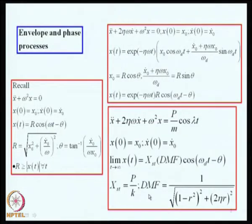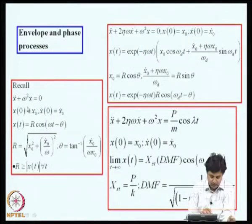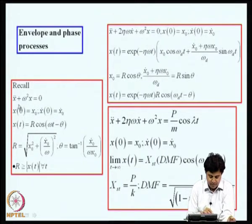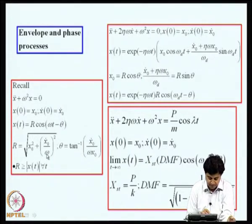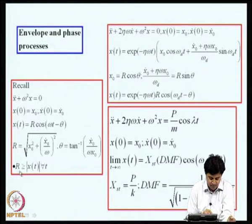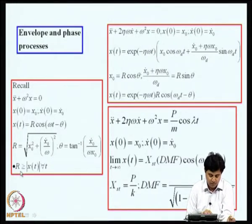I also talked briefly about the notion of envelope and phase processes during the last lecture. We consider, for example, undamped free vibration of a single degree of freedom system. The equation of motion is X-double-dot plus omega-squared X equal to 0, and if the system starts from initial conditions X-naught and X-naught-dot, we can write the solution as X(t) = R cos(omega*t - theta), where R is the amplitude and is a function of the initial conditions and the natural frequency. R has the property that it is greater than or equal to the modulus of X(t) for all t, and this is called the envelope of X(t).